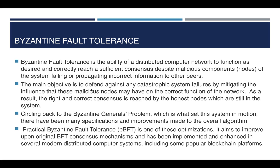This is the Byzantine generals problem analogy, and it is the main issue faced by Bitcoin networks. Byzantine fault tolerance is the ability of a distributed computer network to function as desired and reach sufficient consensus despite malicious nodes in the system trying to propagate incorrect information to other peers. The main objective is to defend against catastrophic system failures by mitigating the influence of malicious nodes, so that honest nodes sending correct information can still reach the right consensus.